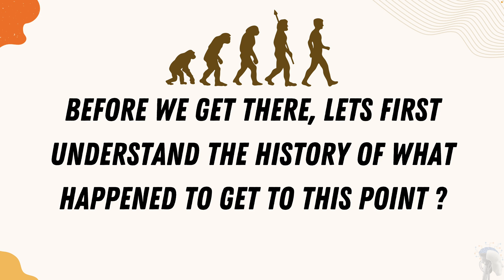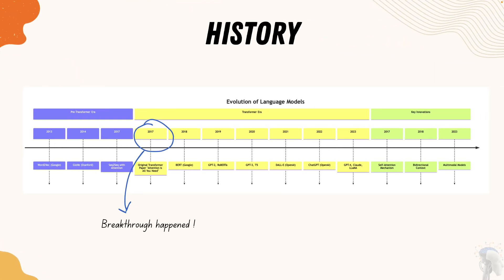The breakthrough started happening all the way from 2013. We can split the entire history into two eras: the pre-transformer era and the transformer era. From 2013 through 2017, the pre-transformer era unfolded. Then from 2017 through 2025, the transformer era began, with quite a lot of breakthroughs happening — all stemming from the groundbreaking paper 'Attention Is All You Need.' We'll discuss that paper in more detail later.